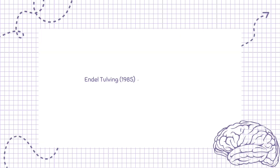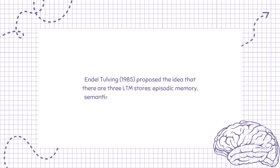Endel Tulving, 1985, proposed the idea that there are three LTM stores: episodic memory, semantic memory, and procedural memory.